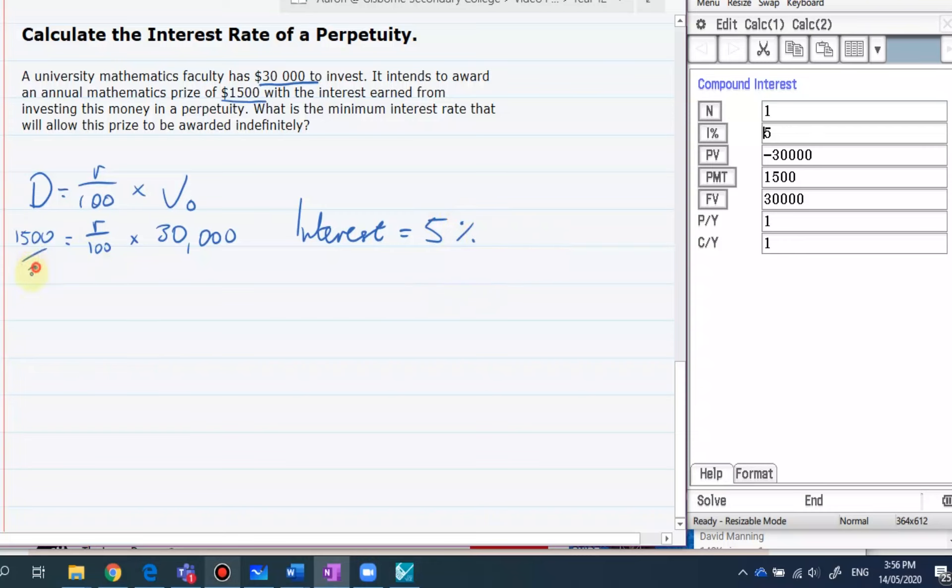divide both sides by 30,000. Takes that away. That becomes 0.05 equals R over 100. And then times by 100 on both sides. Just flip the 100 over. And that gives us an R value of 5.